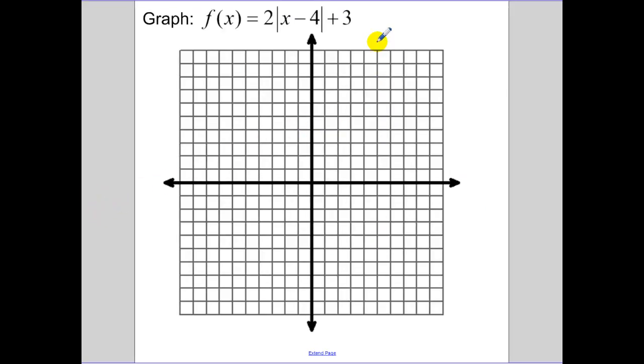So now graphing this function, plot your vertex. Our vertex is (4,3). Because minus, remember you go to the right. So we plot our vertex, (4,3).